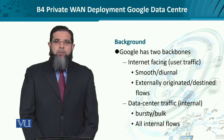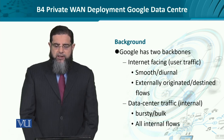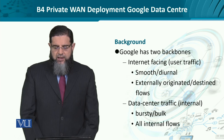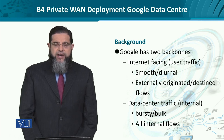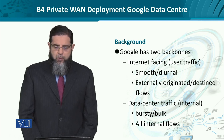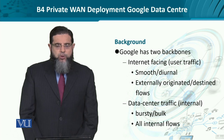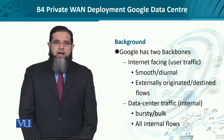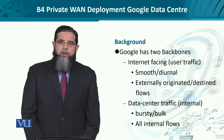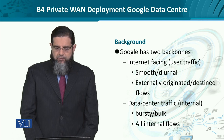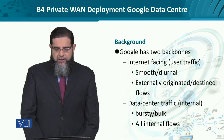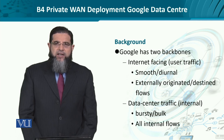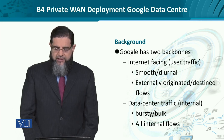Google has two backbones: the northbound and southbound. The one which is internet-facing, we call it northbound, has user traffic which is pretty smooth and it's diurnal — meaning it's more active during the day. The traffic actually originates externally and terminates externally.